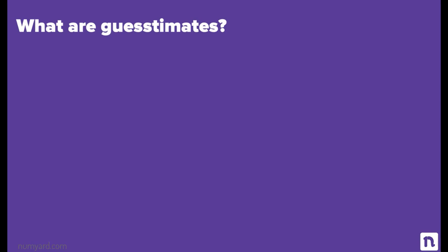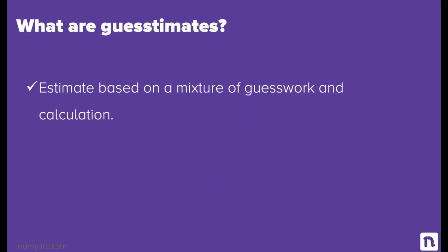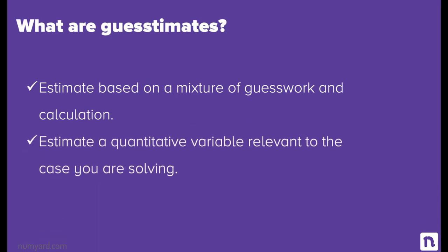As the name suggests, a guesstimate is an estimate based on a mixture of guesswork and calculation. In a guesstimate, you need to estimate a quantitative variable that is relevant to the case you are solving. The case might be anything — it might be relevant to the job you are applying for, relevant to your personal life, or the city you are staying in.